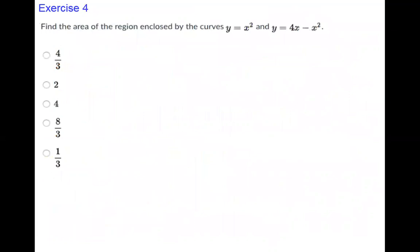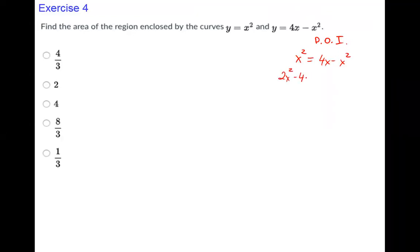Exercise 4: Find the area enclosed by the parabolas y = x² and y = 4x − x². Points of intersection: x² = 4x − x², so 2x² − 4x = 0, factoring gives 2x(x − 2) = 0, so x = 0 and x = 2.